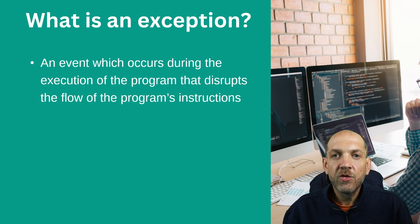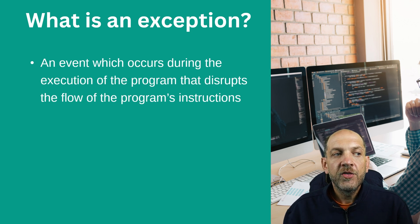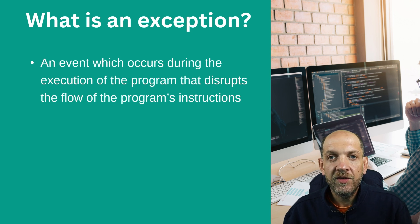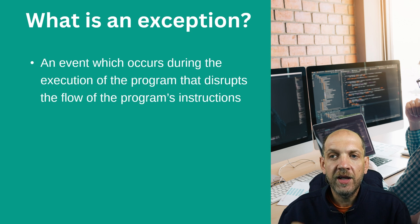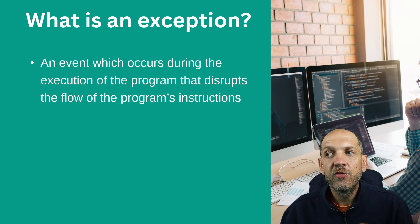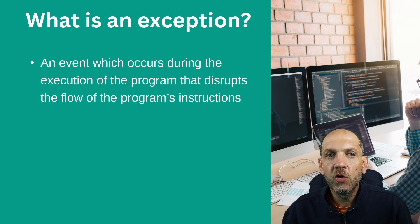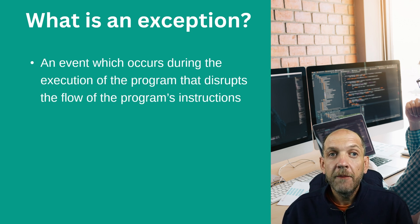Let's start by understanding conceptually what an exception actually is or should be. As the name implies, an exception is just an event — something that happened somewhere down the execution path of your application that was not really foreseen and that disrupts the entire flow of our program. In other words, our program can't simply go further because we are in a situation where we don't really know exactly where to continue.